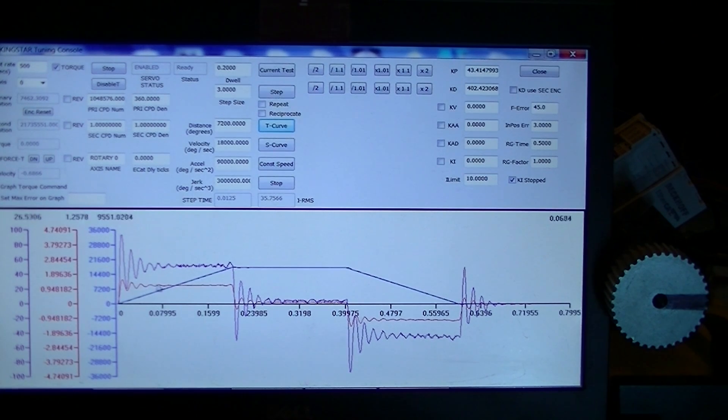This is the instantaneous following error at every point in time. The rate we're running right now is shown up here, EtherCAT rate, microseconds. This is 500 microseconds. So every tick of our EtherCAT network is 500 microseconds. Every 500 microseconds, we pick a new commanded position to get this velocity where we want it.